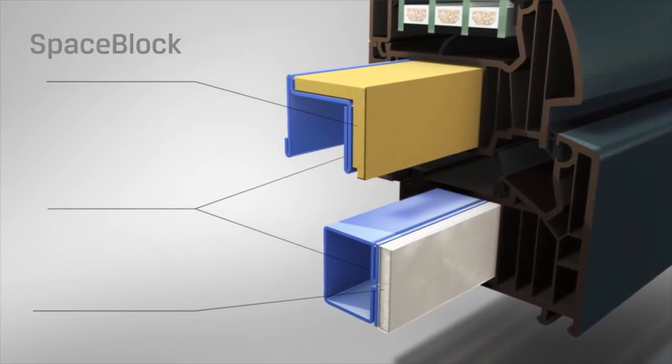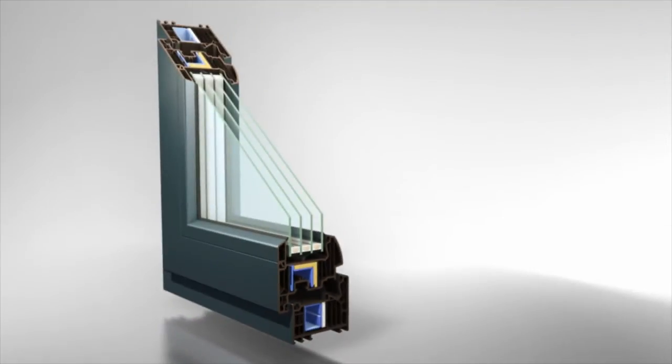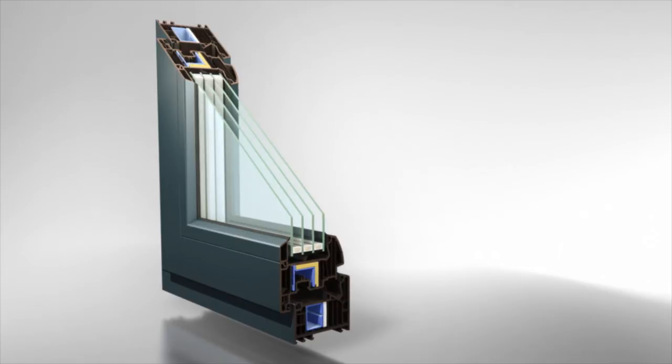The reinforcement in the sash, folded repeatedly and of appropriate thickness, as well as the closed profile of the reinforcement in the frame, allow Ochnoplast to become the sole producer of PVC windows making large sizes in a full color range, simultaneously observing requirements relating to windows for passive homes.